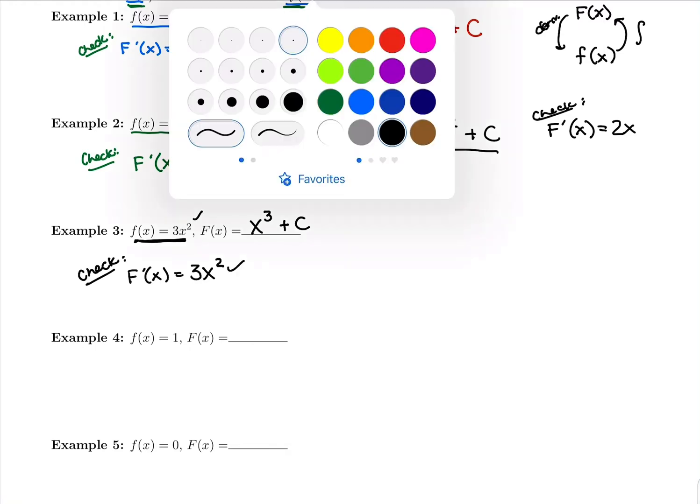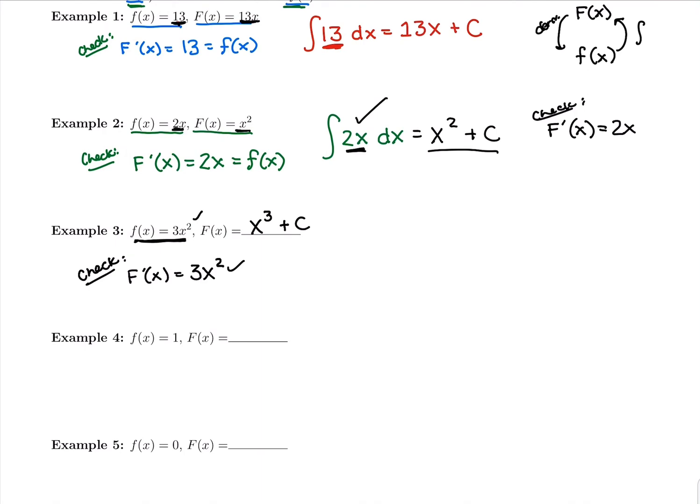So if we do the antiderivative correctly, it gets us back to where we started. In our new notation, how this would look, it would say take the antiderivative of 3x squared. dx just means with respect to x. You're thinking what had a derivative of 3x squared must have been x cubed plus c.